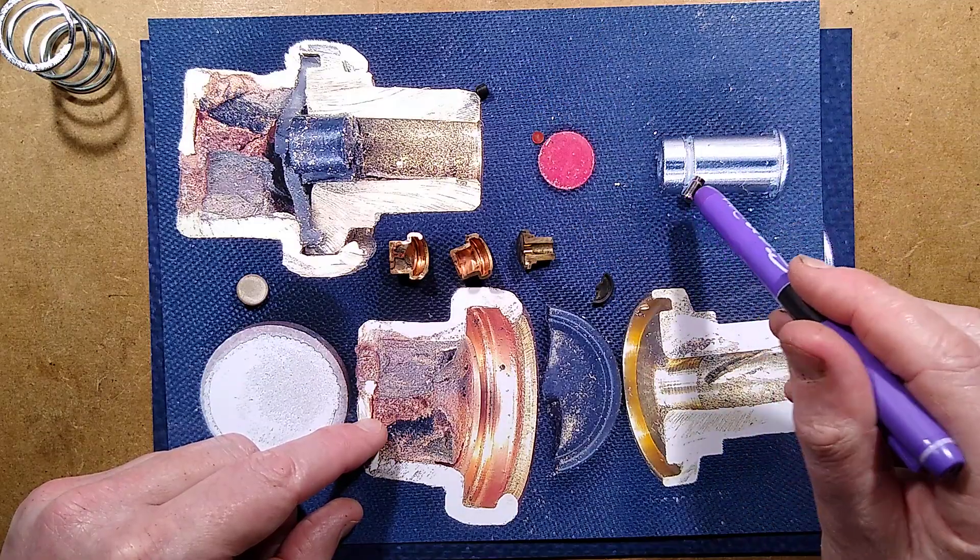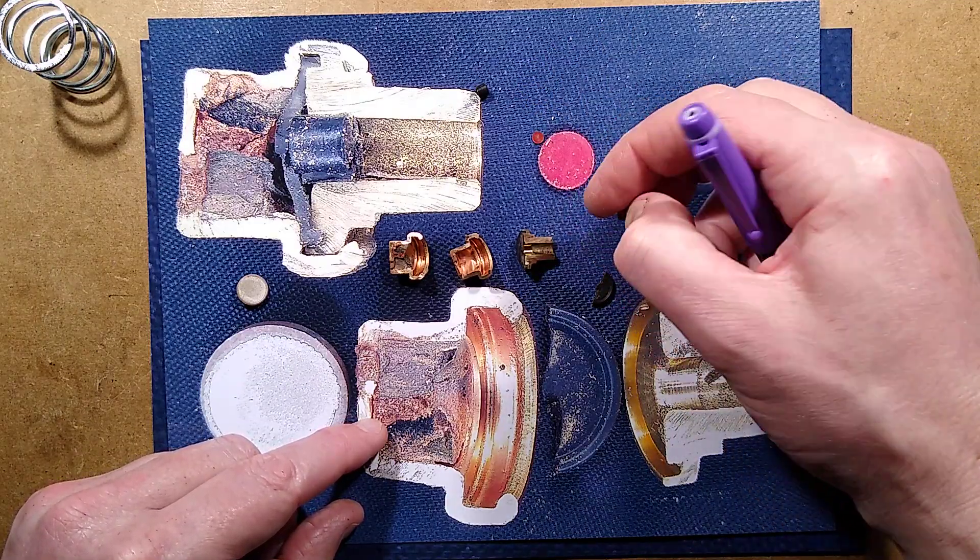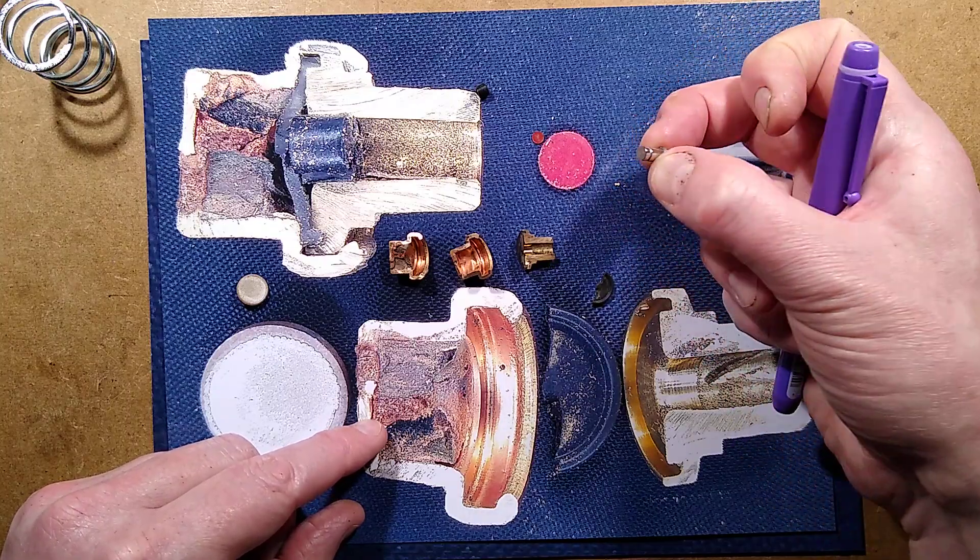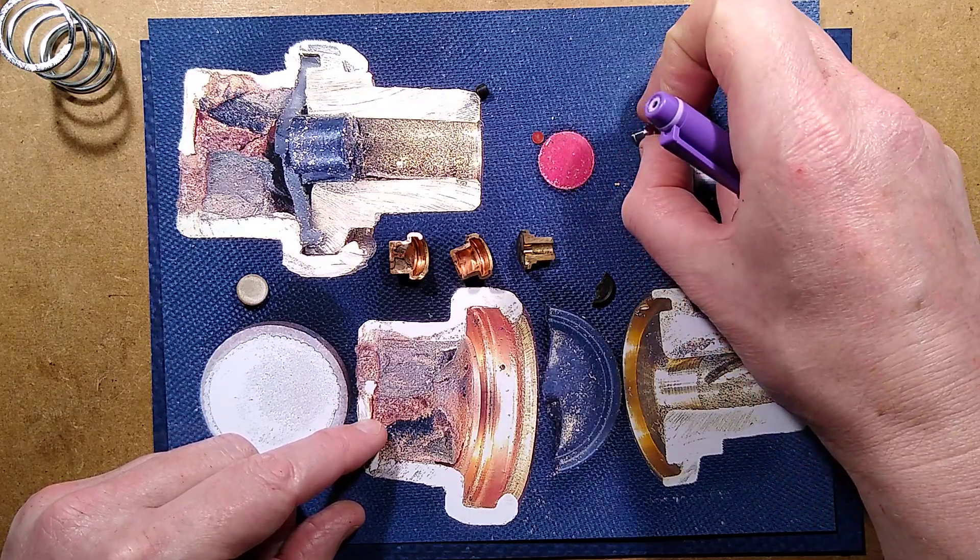And then the actual ram itself which looks, I thought this was steel but it doesn't have much magnetic attraction. I'm not quite sure what that is. Maybe it's stainless. It could well be stainless, that would make sense.